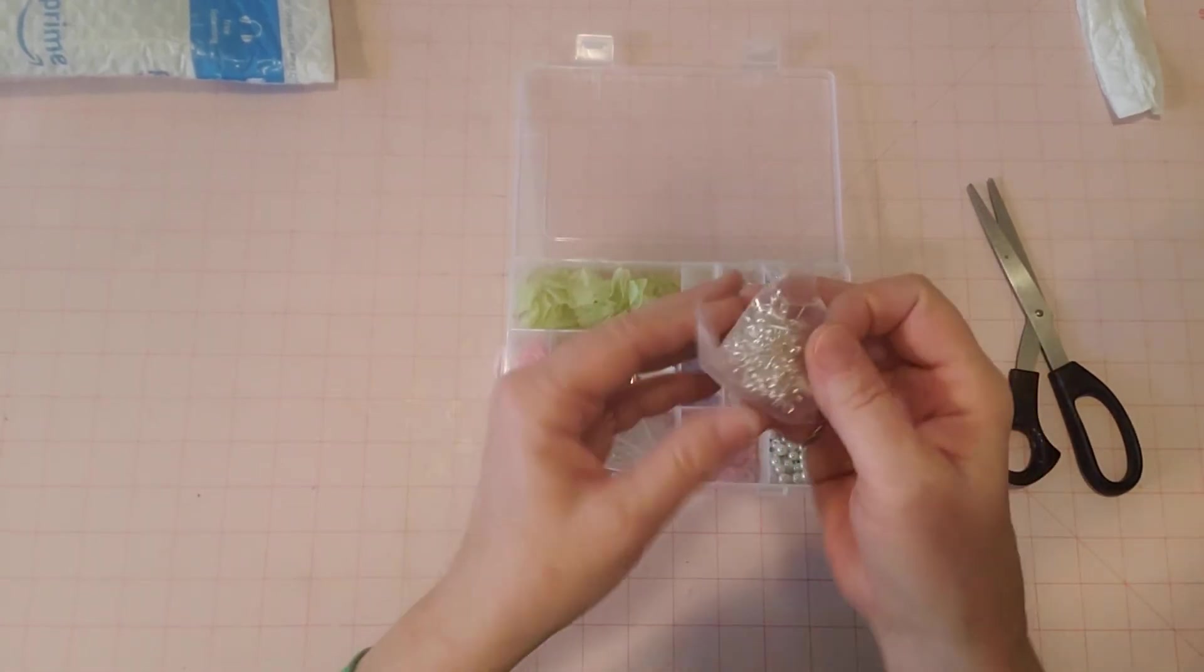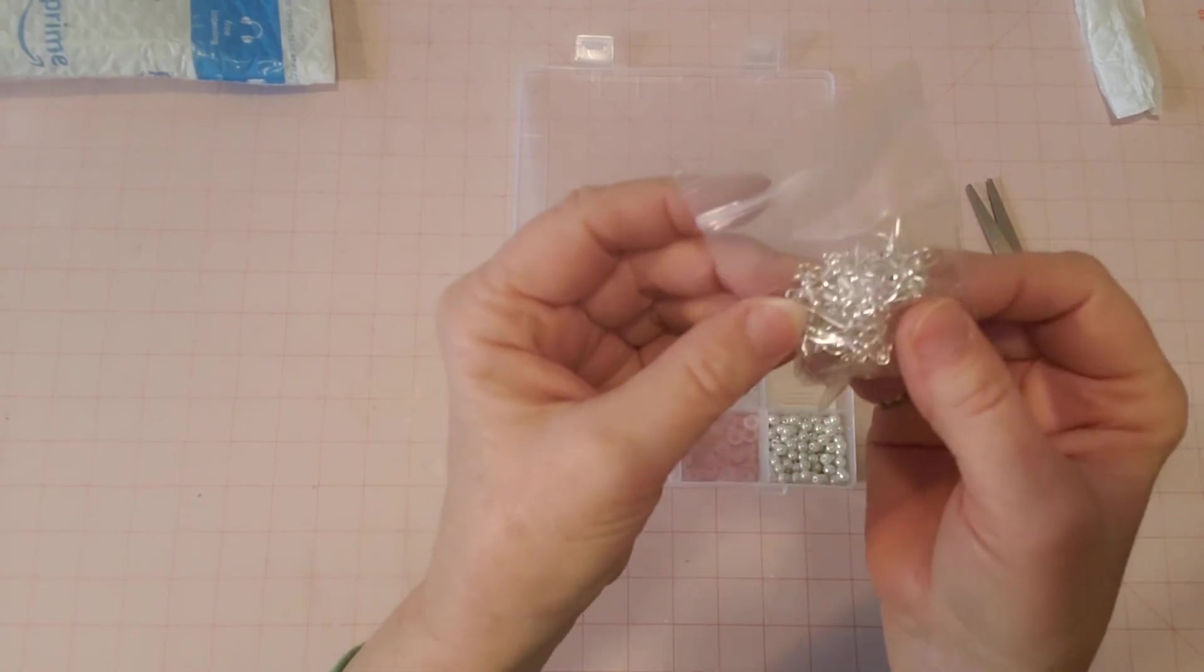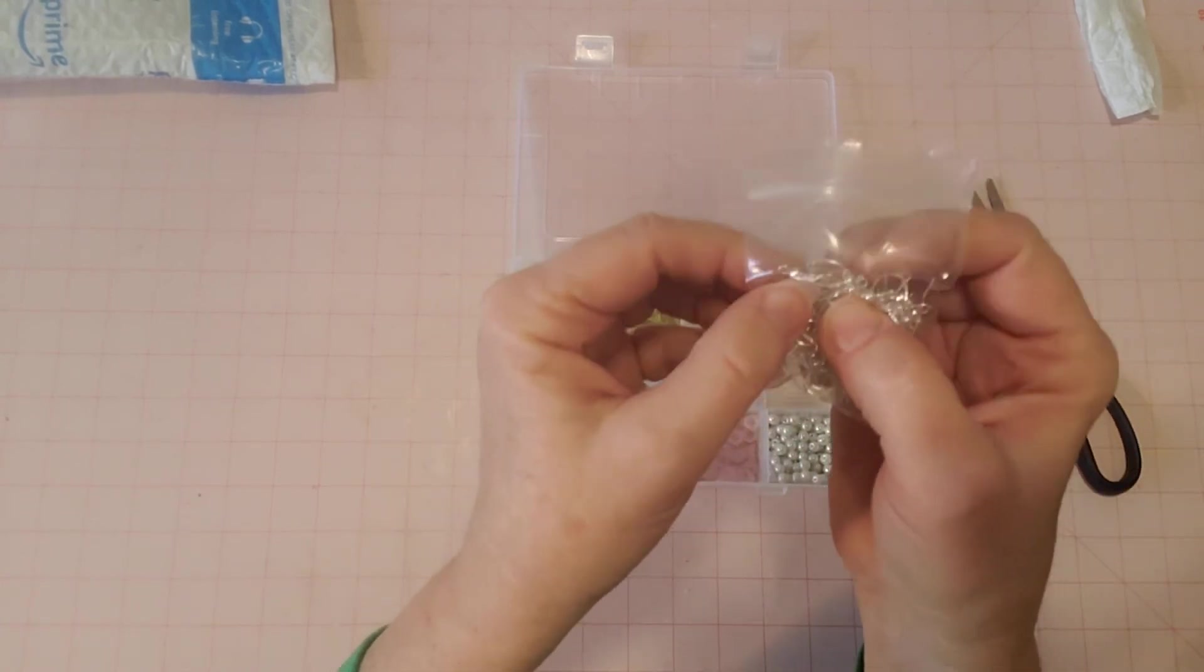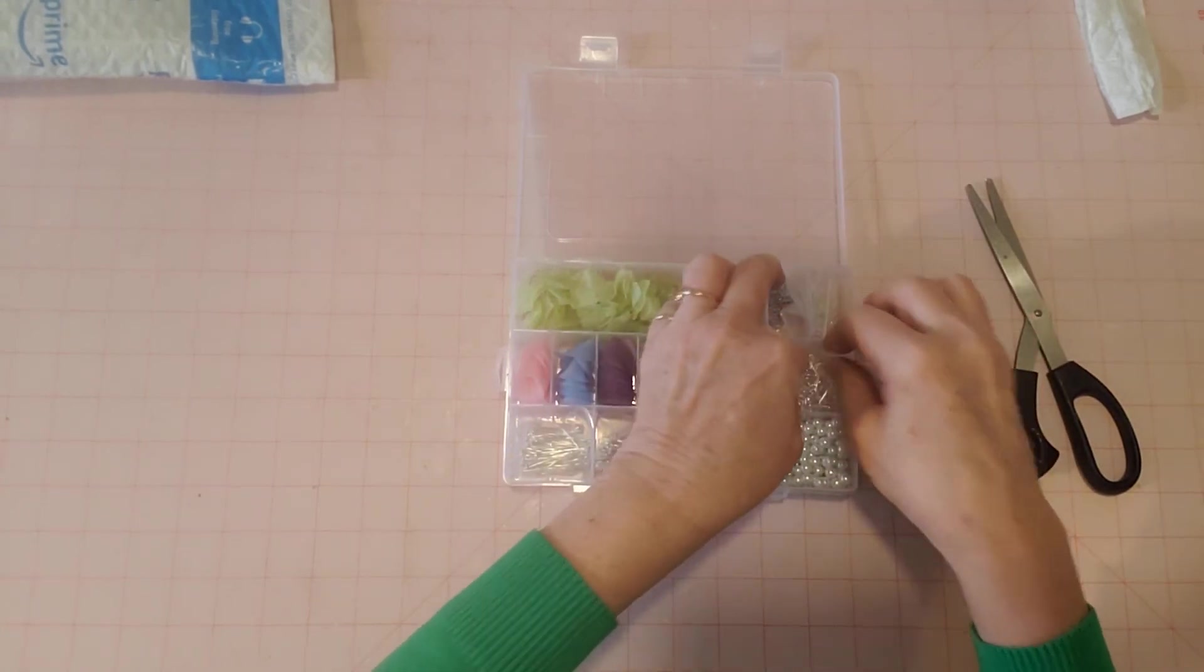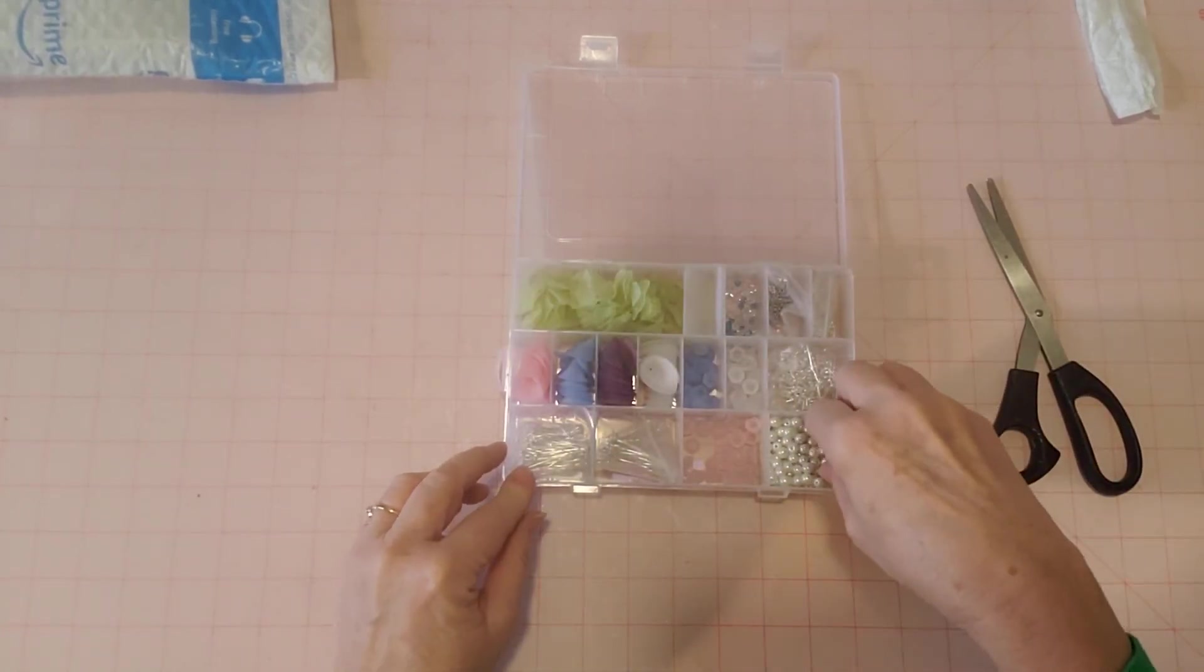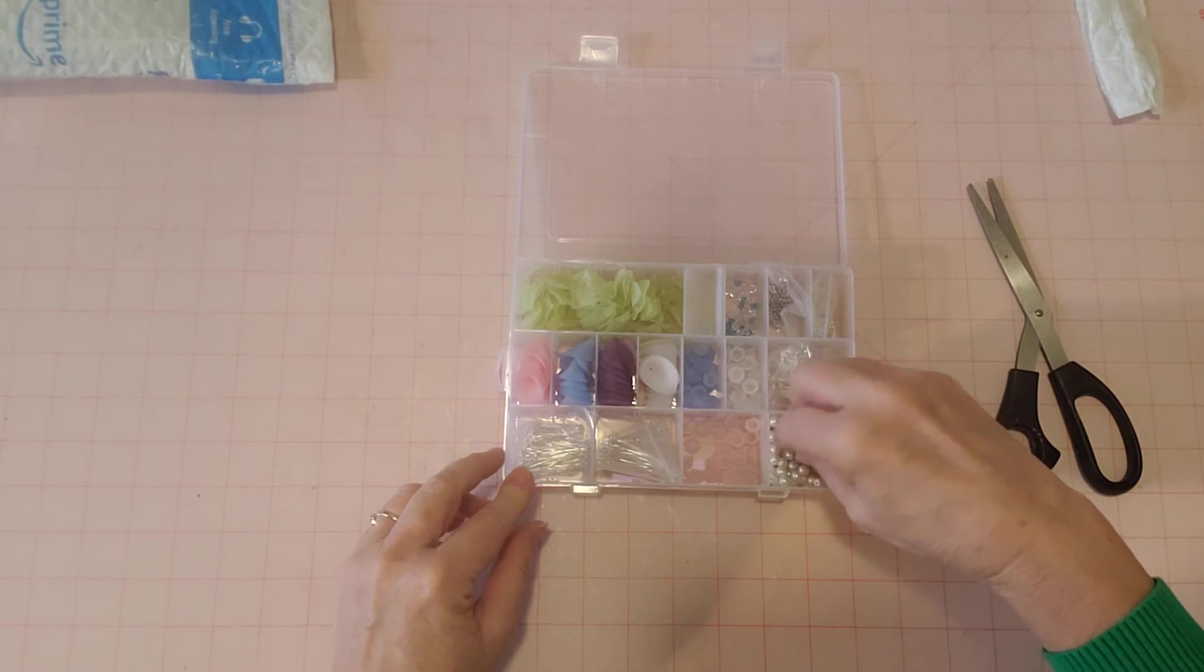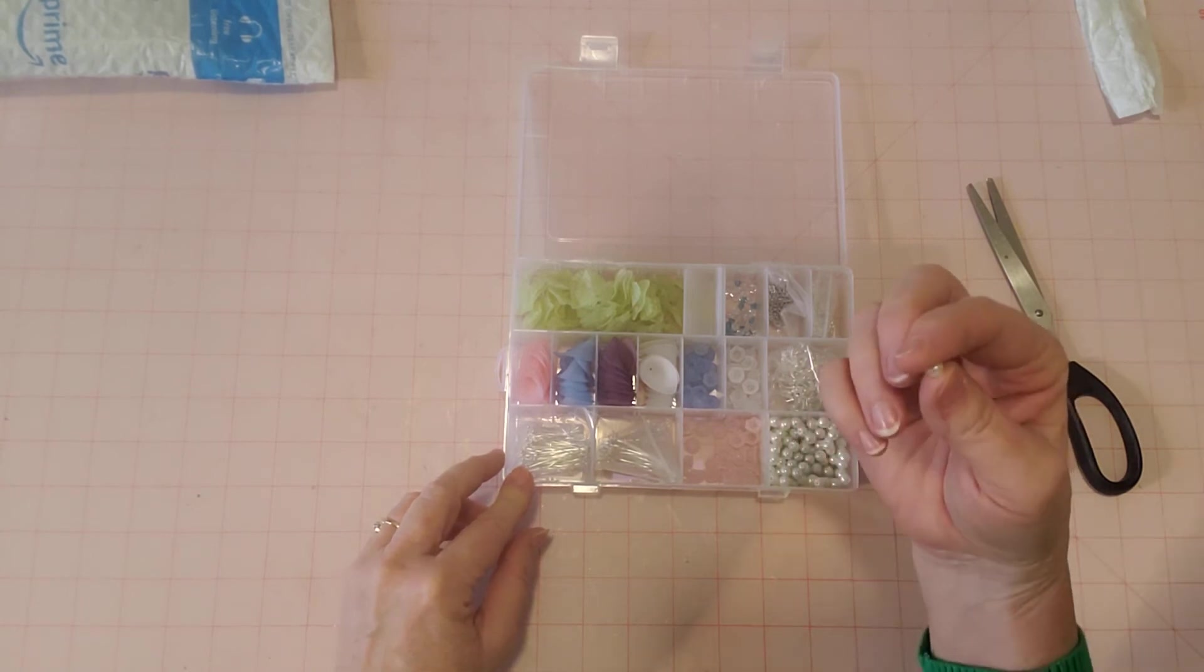Then you have some little earring hooks here. You know, the little hooks that you dangle your earring from. So that's great. And then you have some pearl beads here. So these are all the same size. They are actually little beads.